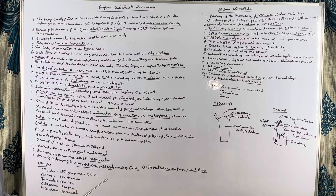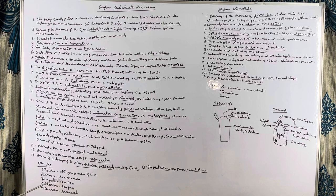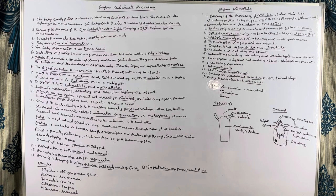Corals are exoskeletons secreted around the sea animals. Examples include: Physalia, commonly known as the Portuguese man-of-war; Adamsia, the sea anemone; Pennatula, the sea pen or sea feather, which resembles a feather; Gorgonium, commonly known as the sea fan; and Meandrina, known as the brain coral because it resembles the shape of the brain.